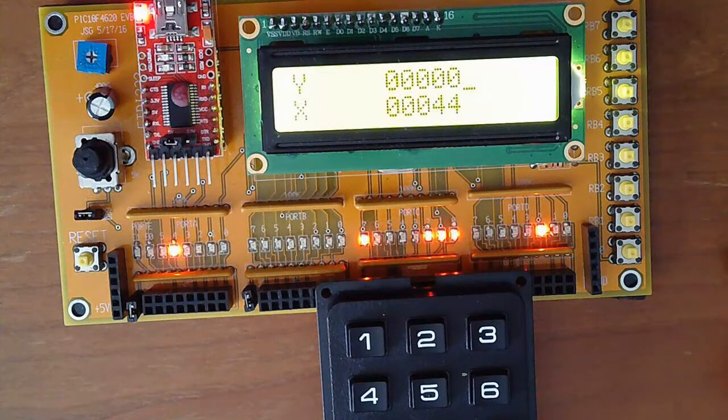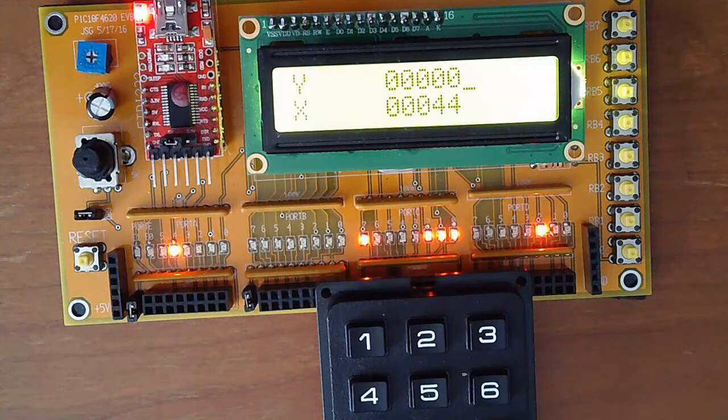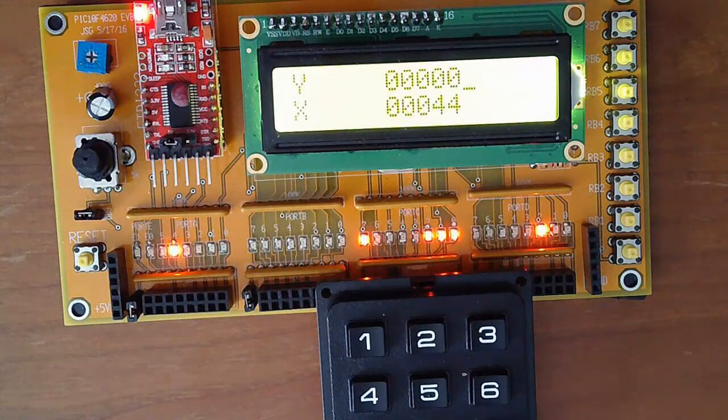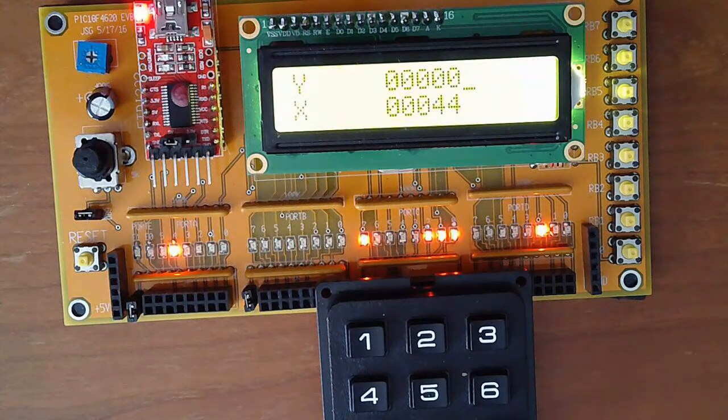So there you have an RPN calculator. Only takes 2k program memory. That's some of the things you can do with a keypad. It's just a convenient way to input numbers into your pickboard. That's lecture number 10 for ECE376 keypads.